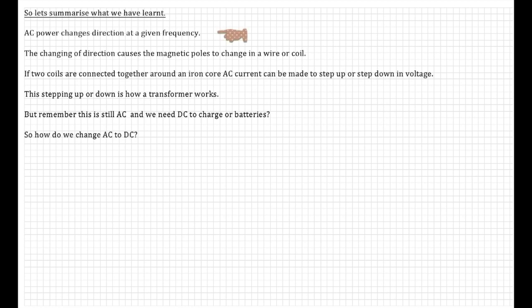Okay, let's summarize what we've learned. AC power changes direction at a given frequency. The changing of direction causes magnetic poles to change in a wire or coil. If two coils are connected together around an iron core, AC current can be made to step up or step down in voltage. This stepping up or stepping down is how transformers work. But remember we're still talking about AC, and we need DC to charge our batteries. So how do we change AC to DC in our battery charger?